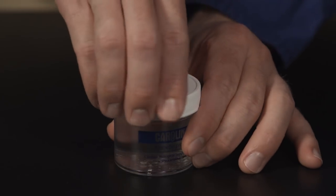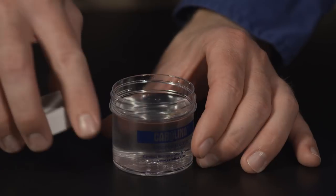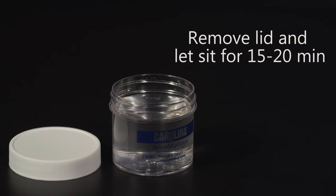To locate the amoebas in your delivered culture, first remove the lid from the culture jar and allow it to sit undisturbed for 15 to 20 minutes. This will allow the amoeba to settle to the bottom of the culture jar.